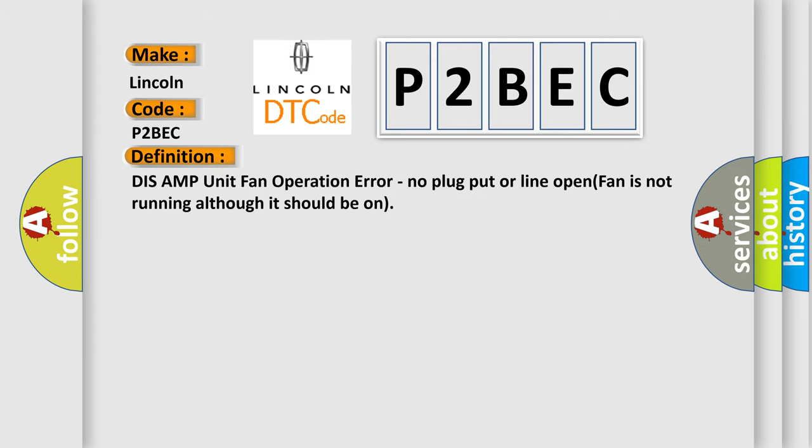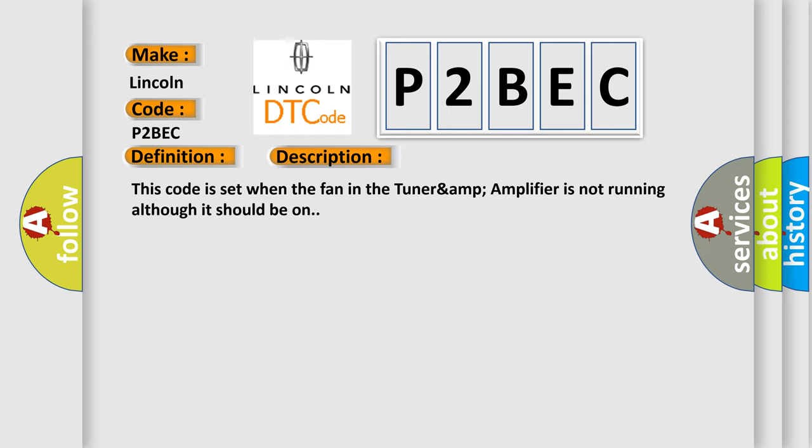The basic definition is: DIS AMP unit fan operation error, no plug put or line open, fan is not running although it should be on. And now this is a short description of this DTC code. This code is set when the fan in the tuner amp amplifier is not running although it should be on. This diagnostic error occurs most often in these cases.